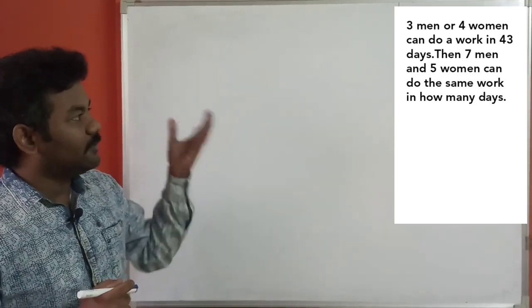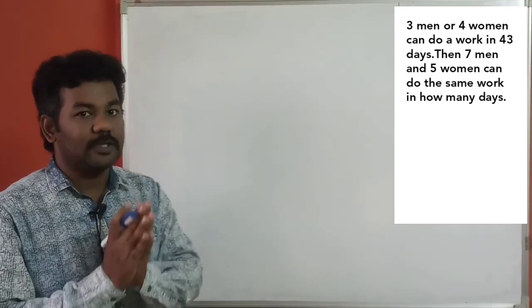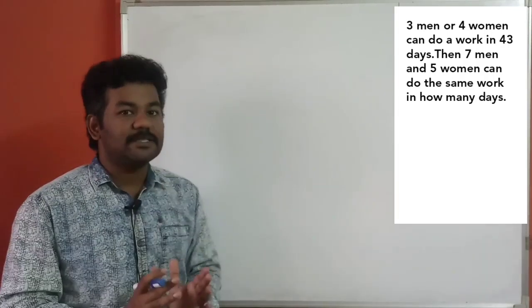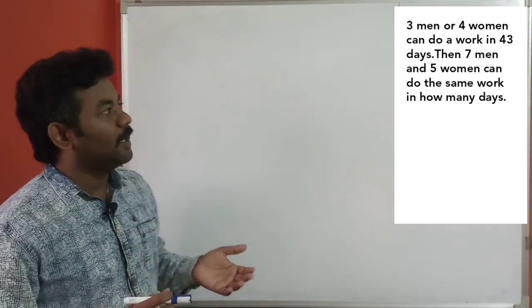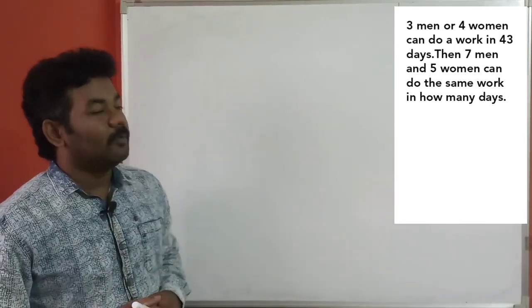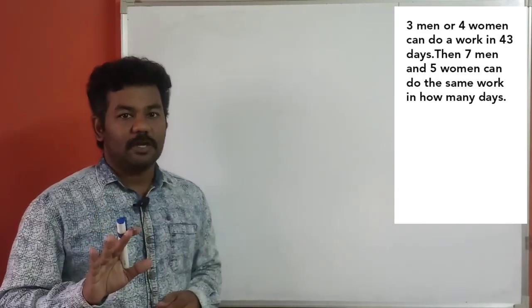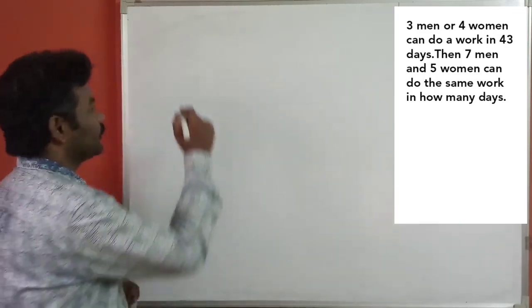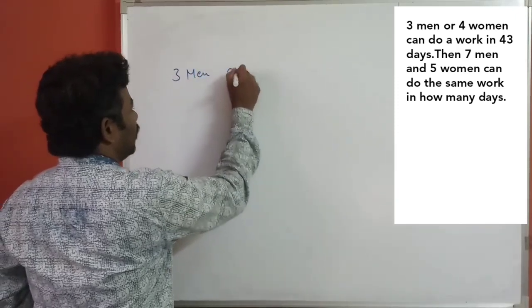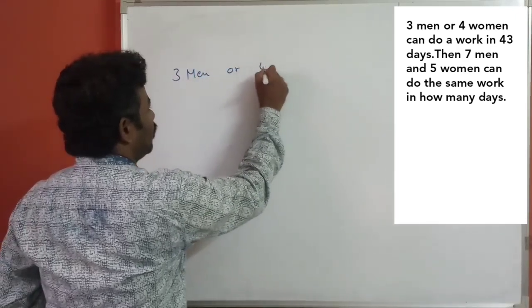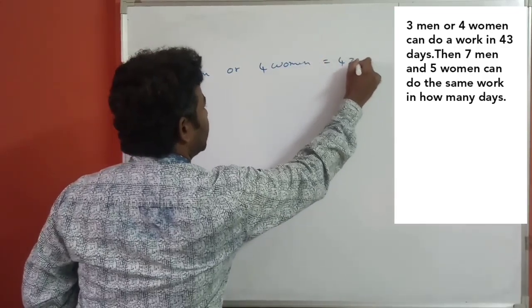How long will seven men and five women do your work — in how many days? Three men and four women can do your work in 43 days.